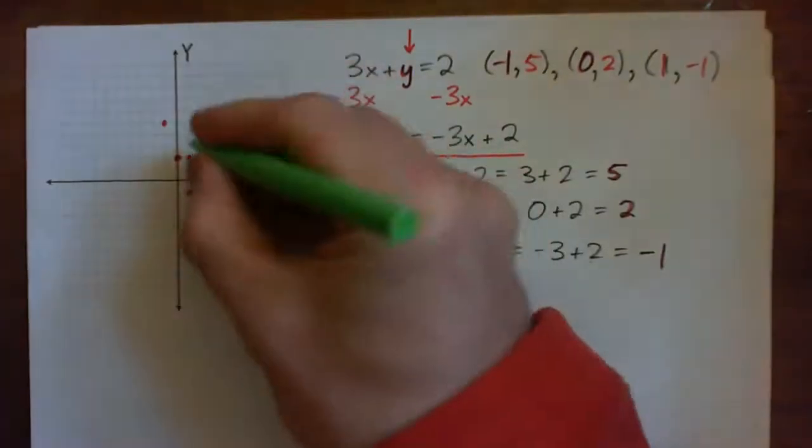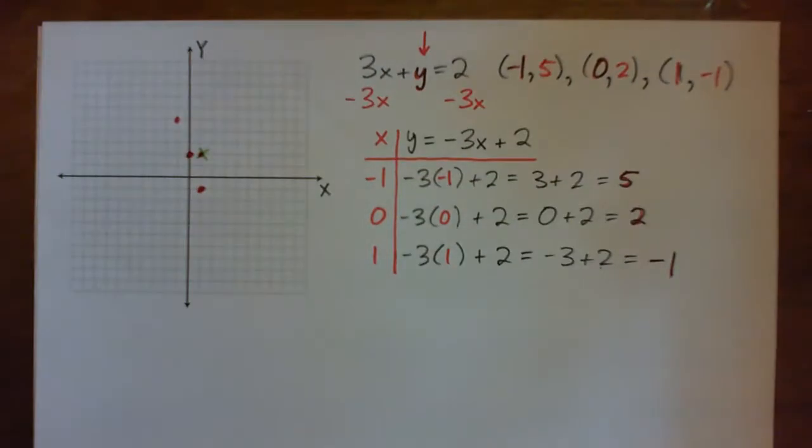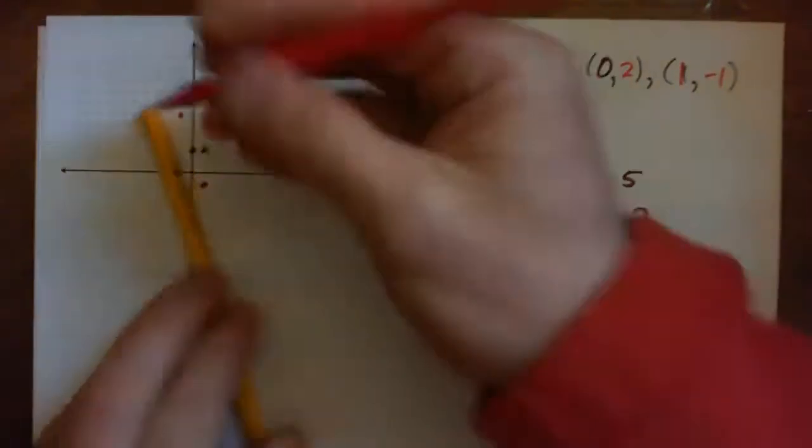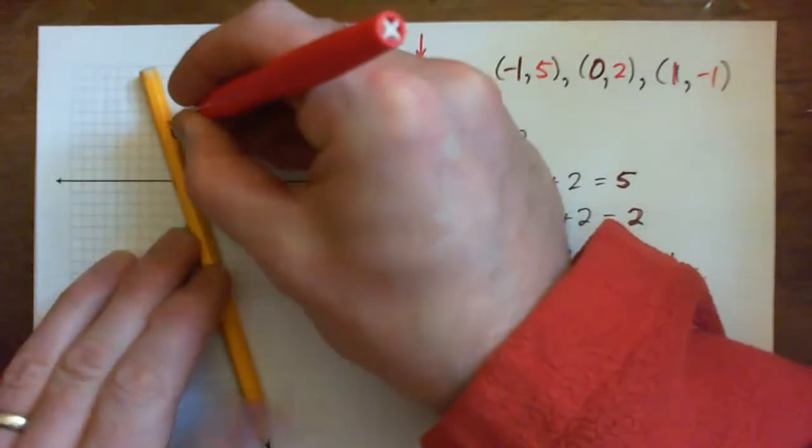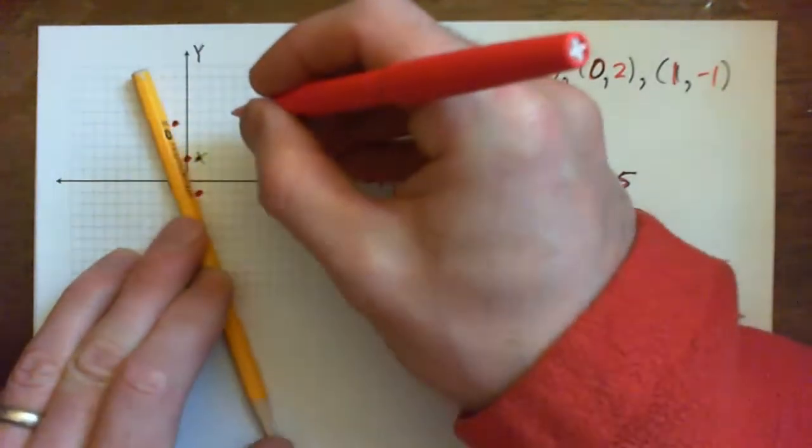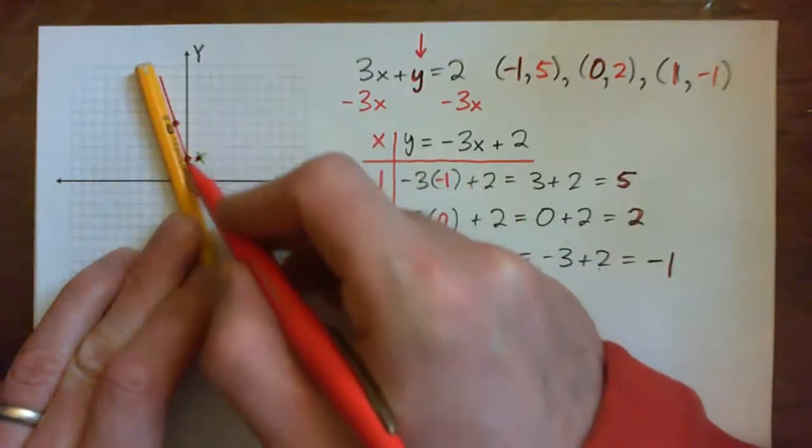And, sorry, that was a mistake. Just try to ignore that point there. All right, so, we've got to put our line through these points. Like that.